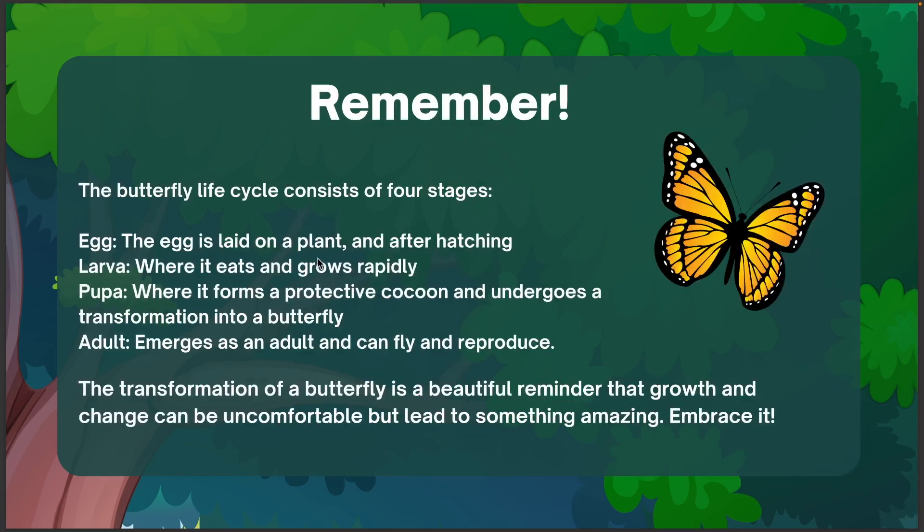Remember, the butterfly life cycle consists of 4 stages. 1. The egg is laid on a plant and after hatching. 2. Larva, where it eats and grows rapidly. 3. Pupa, where it forms a protective cocoon and undergoes a transformation into a butterfly. 4. Adult, emerges as an adult and can fly and reproduce.